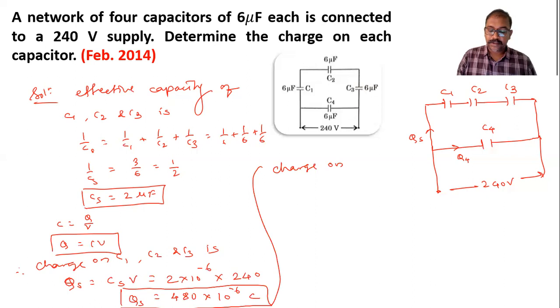Charge on C4 is Q4 = C4 × V. C4 is again 6 microfarads, in farads 6 × 10^-6, and V is 240. So after doing the multiplication,